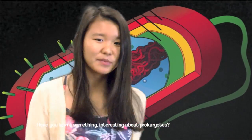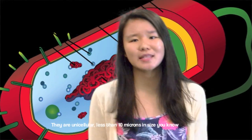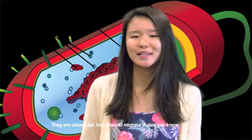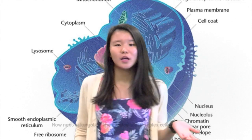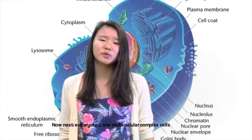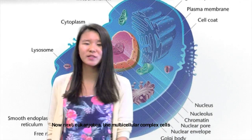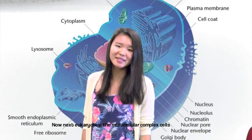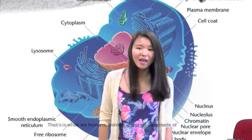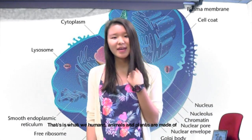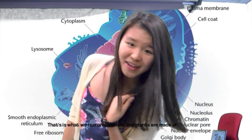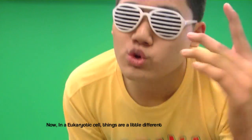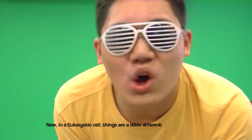Have you learned something interesting about prokaryotes? They are unicellular, less than 10 microns in size. Now, next to eukaryotes — the multicellular, complex cells — that is what we humans, animals, and plants are made of.